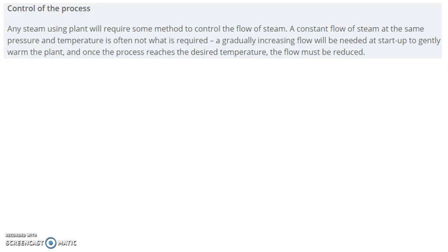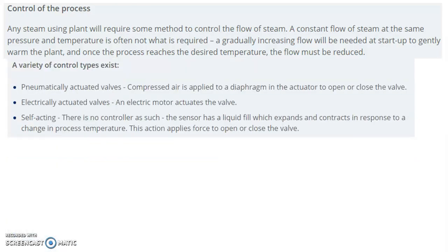Next is control of the process. Any steam-using plant will require some method to control the flow of steam. A constant flow of steam at the same pressure and temperature is often not what is required. A gradually increasing flow will be needed at start-up to gently warm the plant, and once the process reaches the desired temperature, the flow must be reduced. A variety of control types exist: pneumatically actuated valves, electrically actuated valves, and self-acting valves.